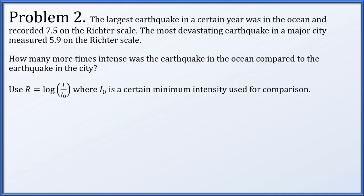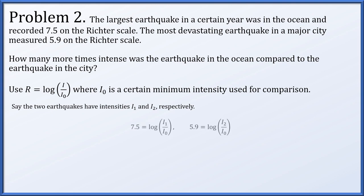Problem 2. The largest earthquake in a certain year was in the ocean and recorded 7.5 on the Richter scale. The most devastating earthquake in a major city measured 5.9 on the Richter scale. How many more times intense was the earthquake in the ocean compared to the earthquake in the city? Use r equals the logarithm of i over i0, where i0 is a certain minimum intensity used for comparison. Let's suppose the two earthquakes have intensities i1 and i2, respectively.